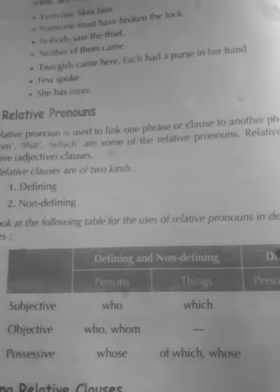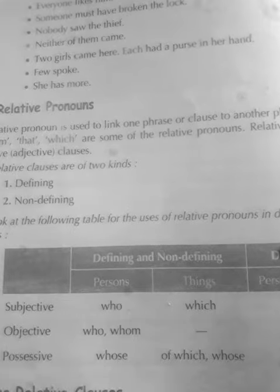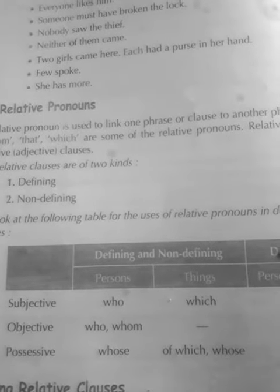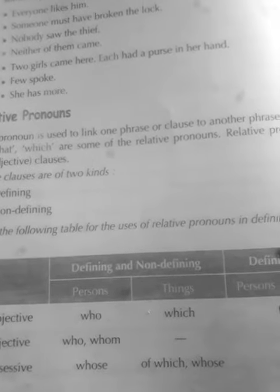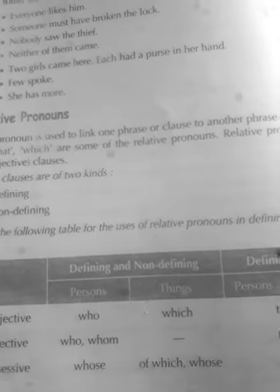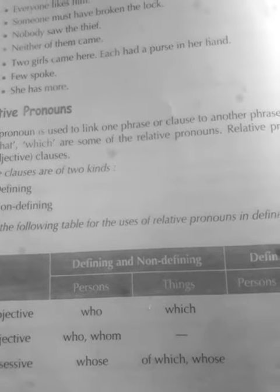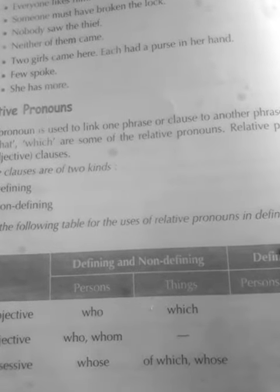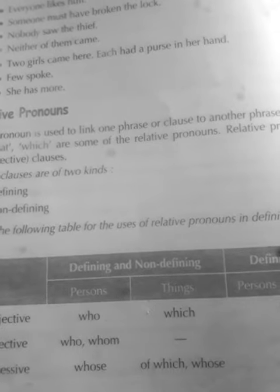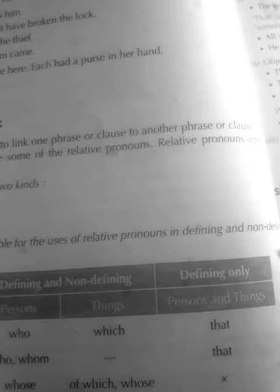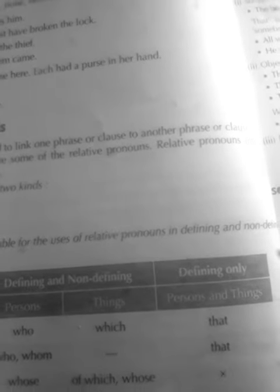Defining or non-defining covers three kinds of cases: subjective, objective, and possessive on the left side, and defining and non-defining for persons and things. For persons: who, whom, whose is used. For things: which, of which, whose is used. And in defining clauses only, for both persons and things, that is used.